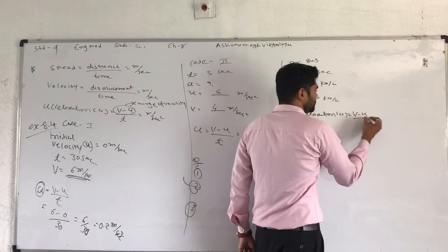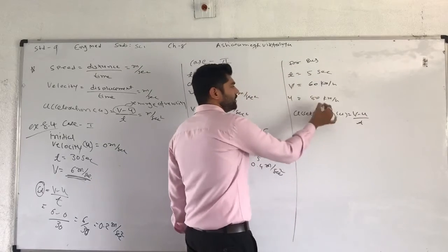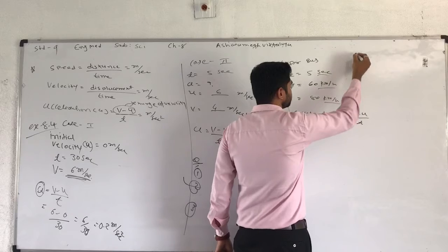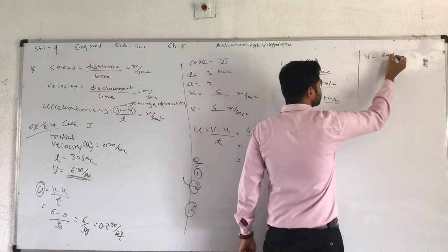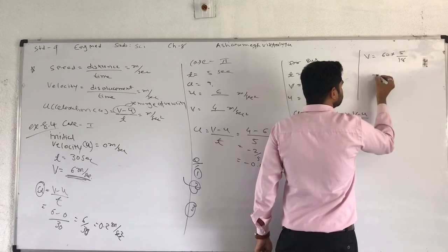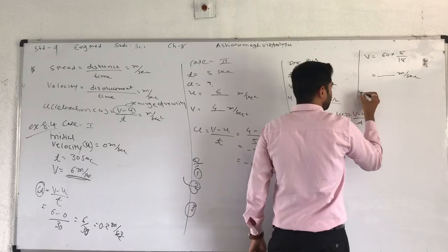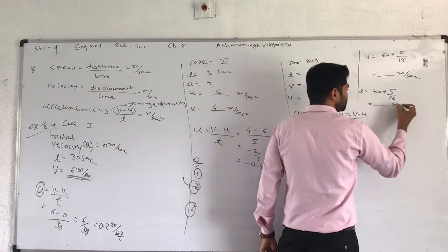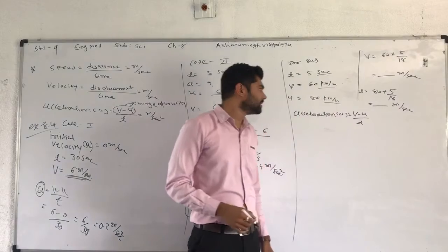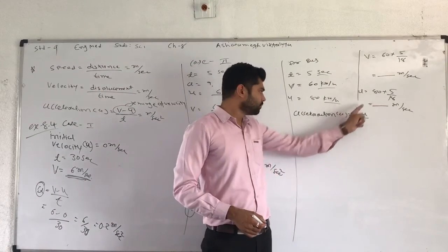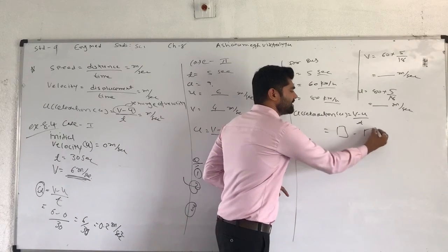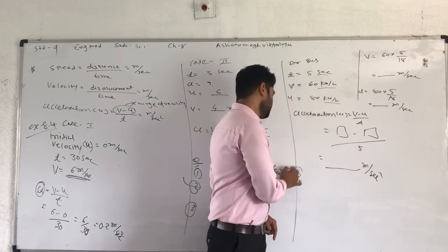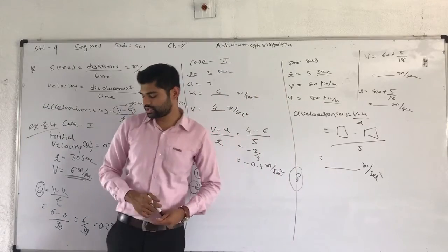So here acceleration A is equal to V minus U divided by t. But here all units are different in seconds and this km per hour. Therefore, one side of V is equal to 60 multiplied by 5 by 18, answer in meter per second. U is equal to 80 multiplied 5 by 18. So answer in meter per second. Remember that meter per second you get the answer. Putting this value here V minus U divide by time is also 5. Therefore you get answer acceleration in meter per second square.